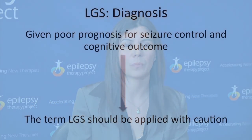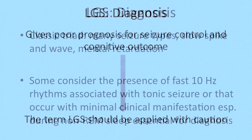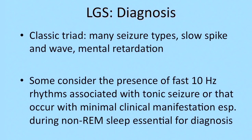Given the poor prognosis of Lennox-Gastaut syndrome with regards to seizure control and cognitive outcome, it is very important to apply that term with caution. So how do we go about diagnosing it, and what kind of investigations do we have to do once we diagnose it?